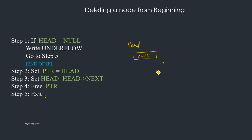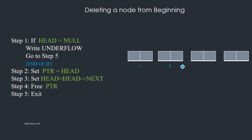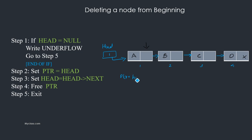Otherwise, if there is a value in the linked list — say there are four nodes with data a, b, c, d — our head pointer is pointing to the first node. To delete the first node, we set a new pointer ptr equal to head, so ptr now points to where head was pointing.